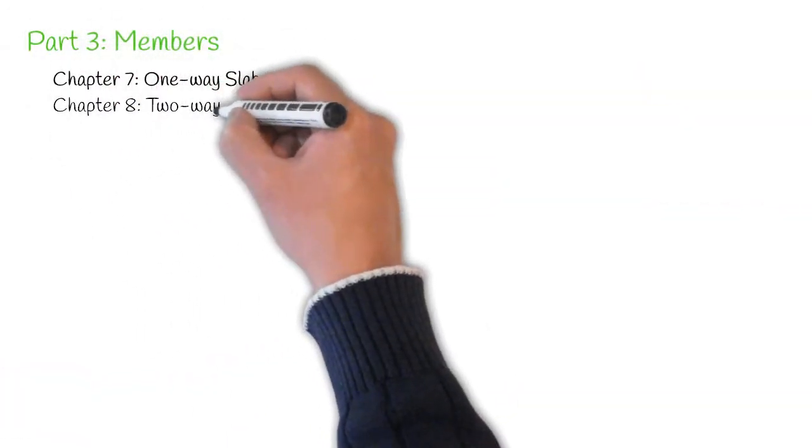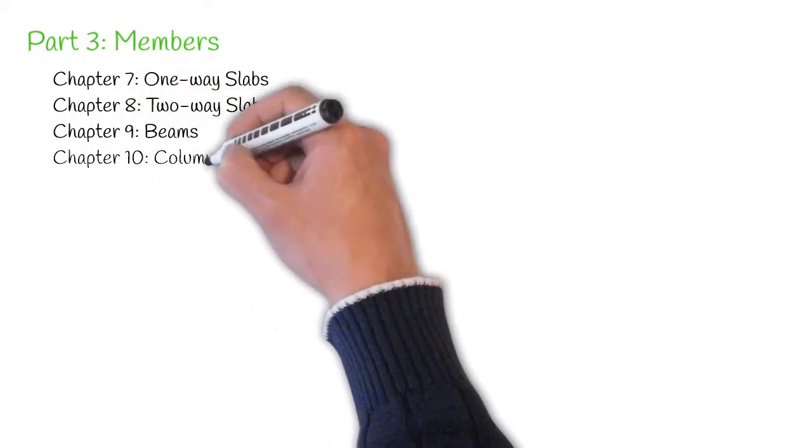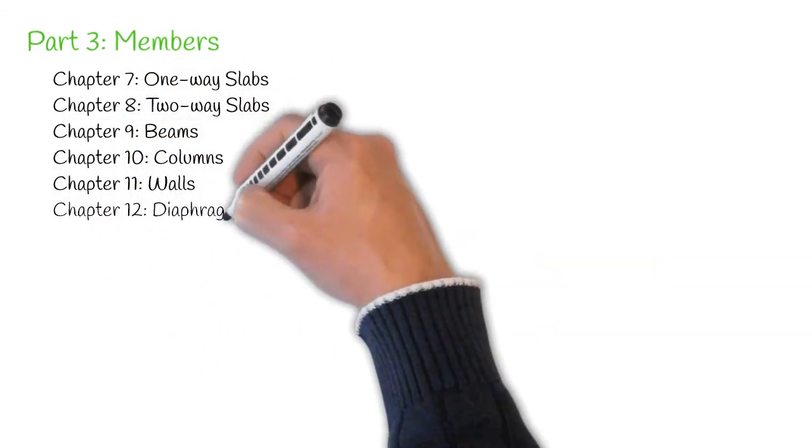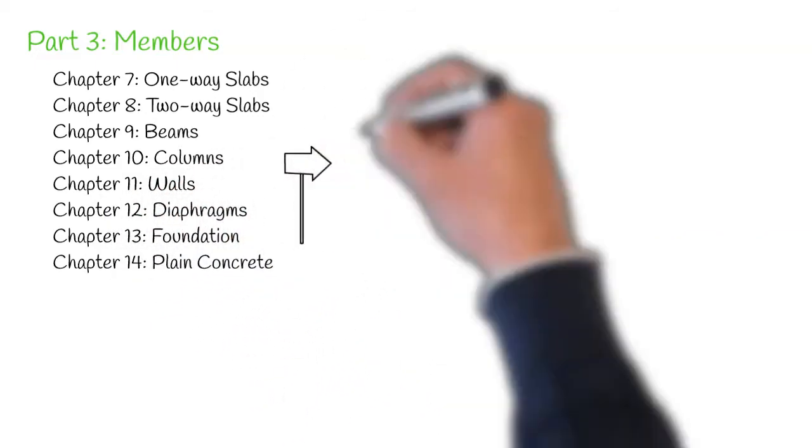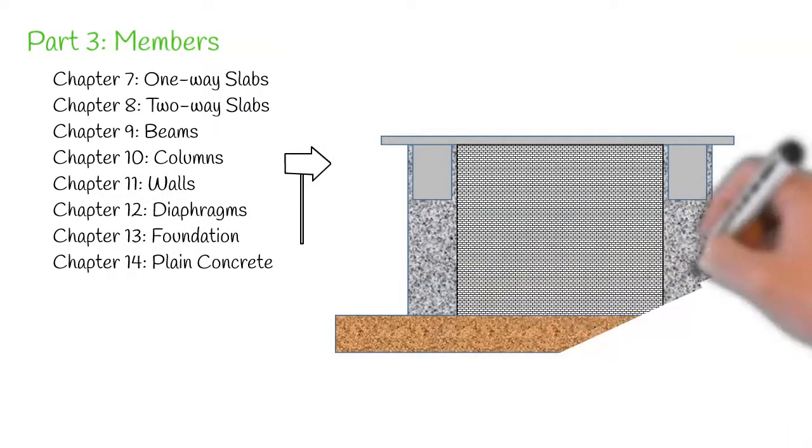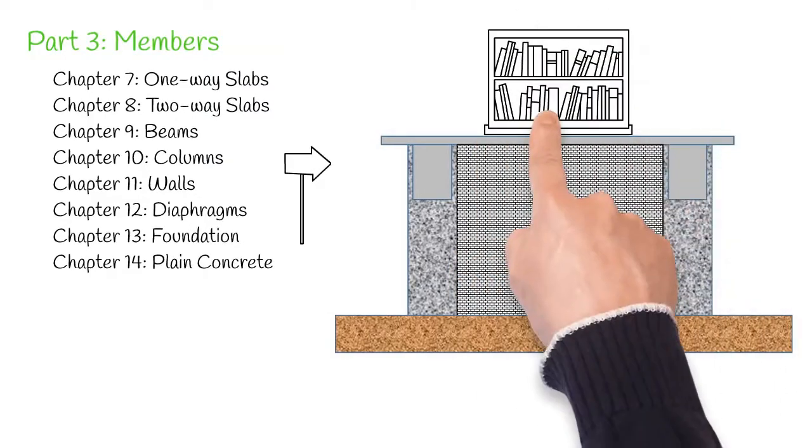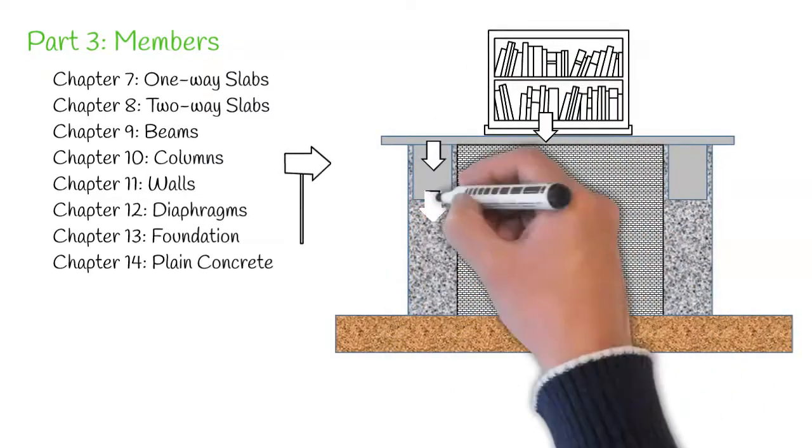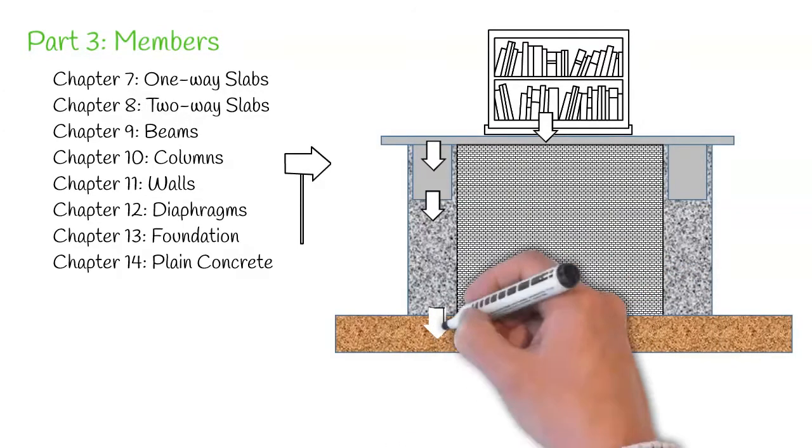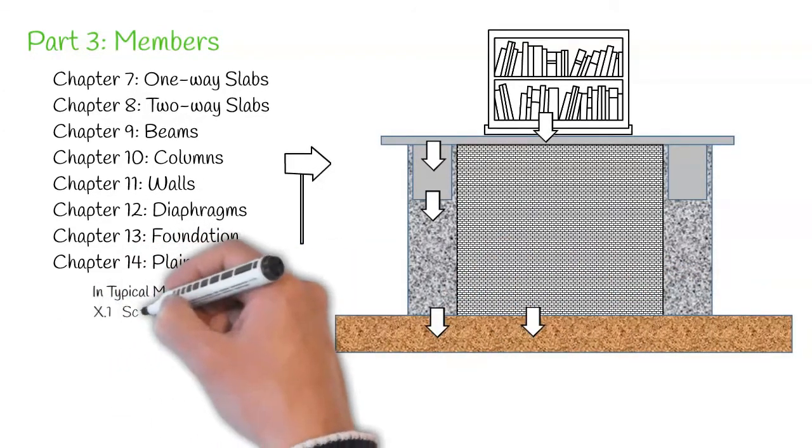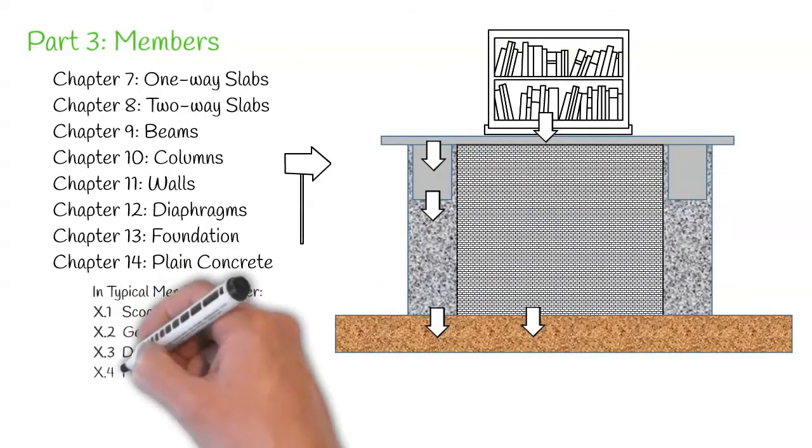Part 3, Members. Designers probably spend most of the time in Part 3 of the code. The chapters are arranged in a general order of design sequence. For example, if there are no other constraints involved and just following the load path, I will start designing a slab and then go to the beam, columns, walls, diaphragms as lateral load resisting system and the foundation. Each chapter in Part 3 is also arranged in the order of design.